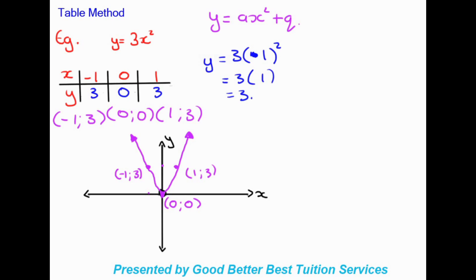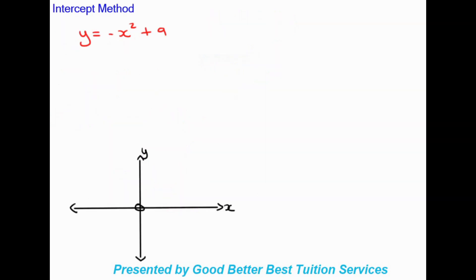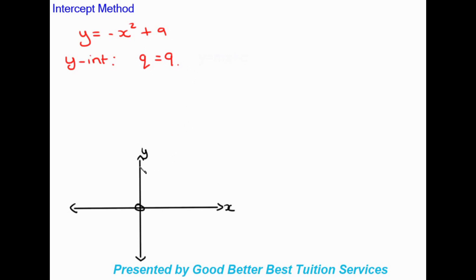Next we're going to look at the intercept method. The first thing we always want to do is identify our y-intercept. If you recall, when we looked at the equation for the parabola, the q value was the y-intercept. So in this case we can just take our q value, which is positive 9. We say q is equal to 9, and we go to our graph and plot that point — that would be 9 on the y-axis.